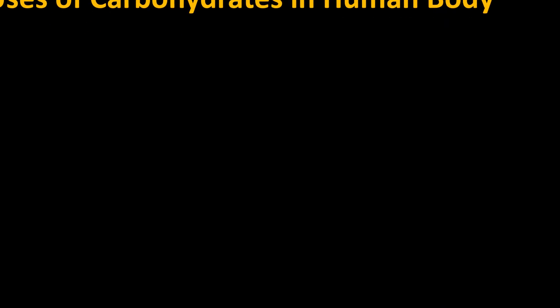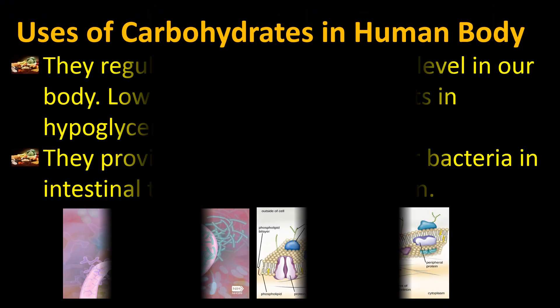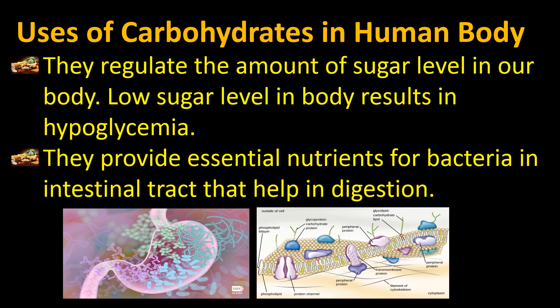Carbohydrates regulate the amount of sugar level in our body. Low sugar level in the body results in hypoglycemia. 'Hypo' means lesser or decrease; 'glycemia' refers to the amount of glucose — so hypoglycemia means a decrease in the amount of glucose. Carbohydrates also provide essential nutrients for bacteria in the intestinal tract that help in digestion.